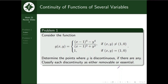Mag-proceed naman tayo sa first problem. We consider the function G(x,y), which is a piecewise function. Sinasabi niya na if (x,y) = (1,0), then the value of our function is just 1. However, if (x,y) is not equal to (1,0), then the value of our function is defined by this expression. We need to determine the points where G is discontinuous, if there are any, and then classify the discontinuity as either removable or essential.